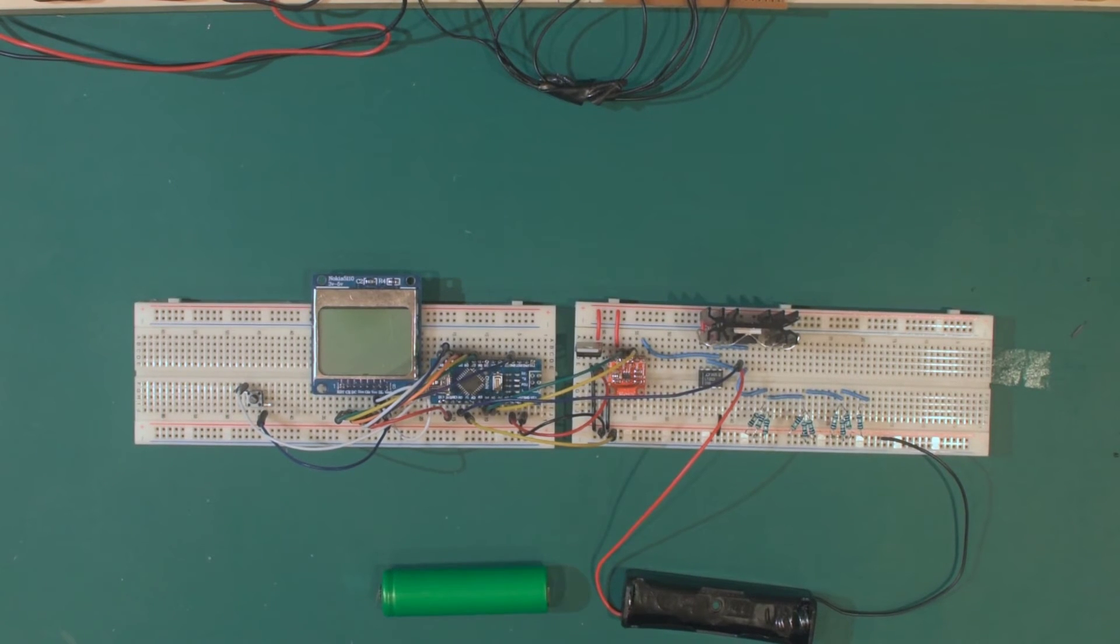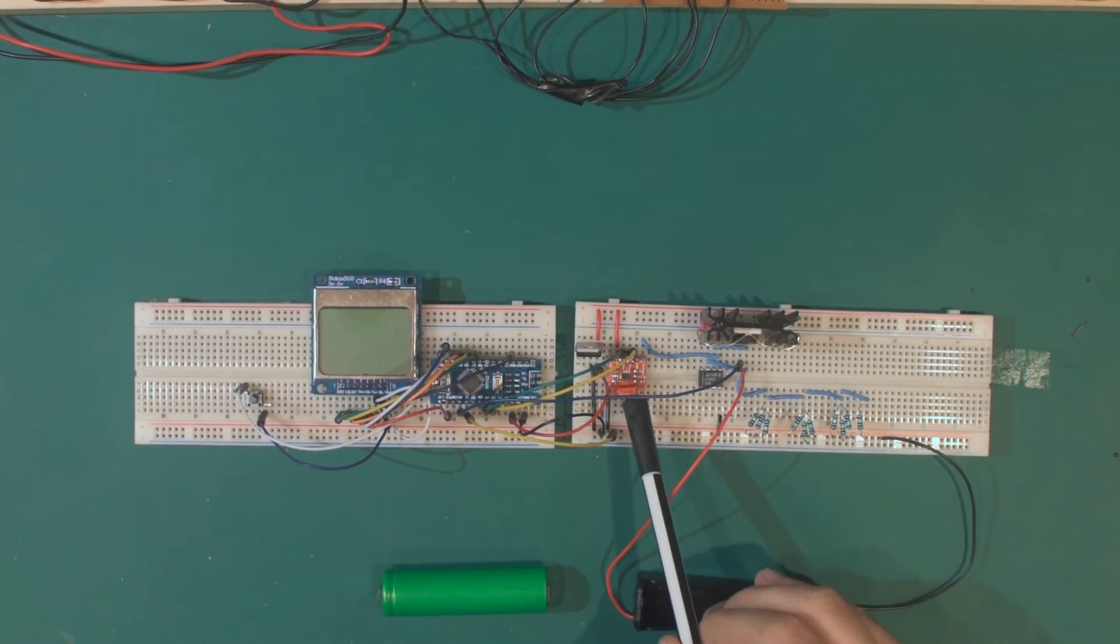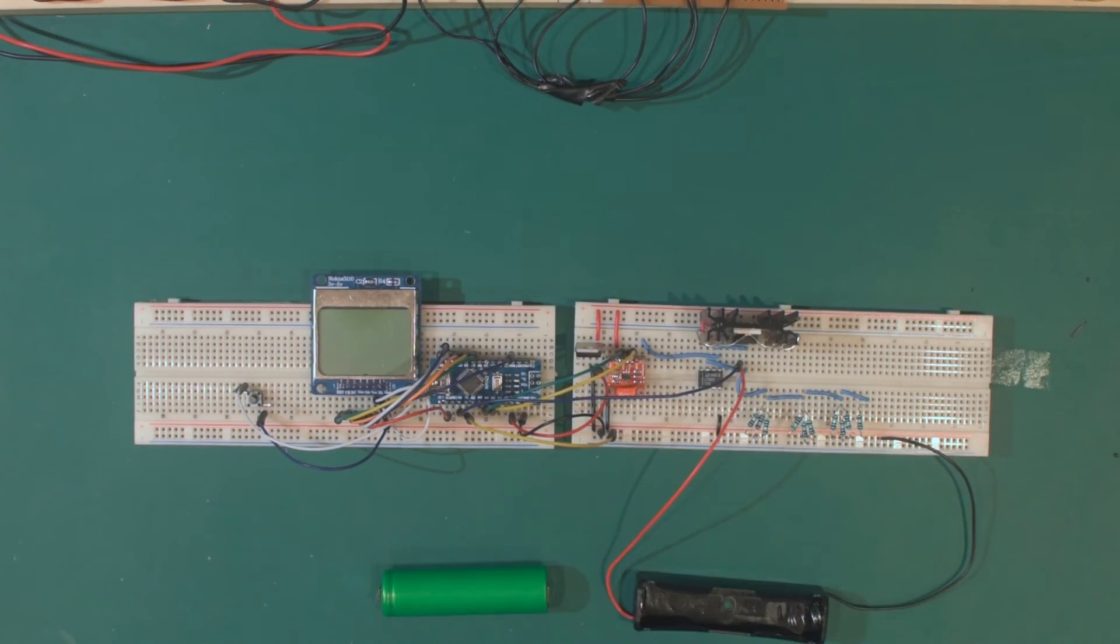So I'm done. Here we now have the MCP4725 digital to analog converter which is replacing the small potentiometer that was there controlling the input voltage to the Op-Amp.